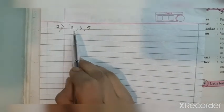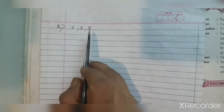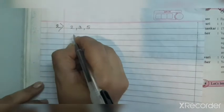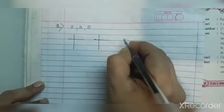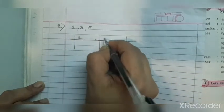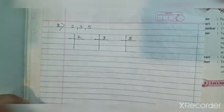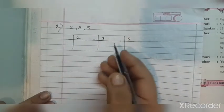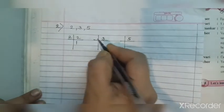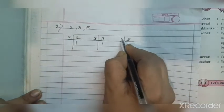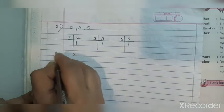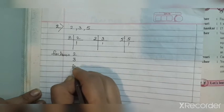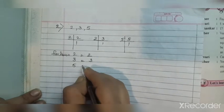The second sum is 2, 3, and 5 — we have to find the LCM of 2, 3, and 5. I will solve this by the factor method. One thing you will observe is that all three numbers are prime numbers, so we will not get any further factors. The factors will be the numbers themselves: 2, 3, and 5.